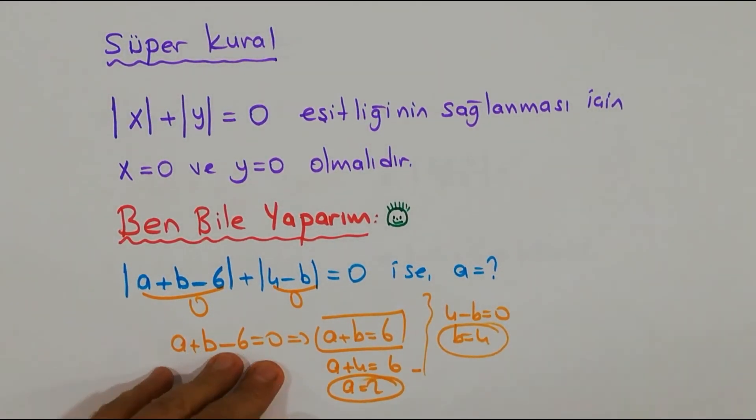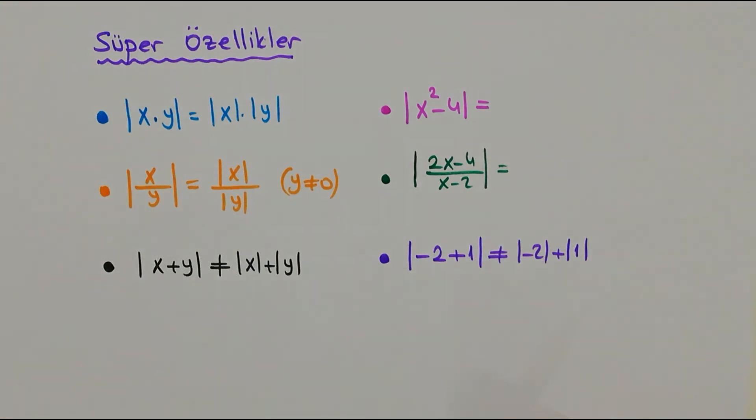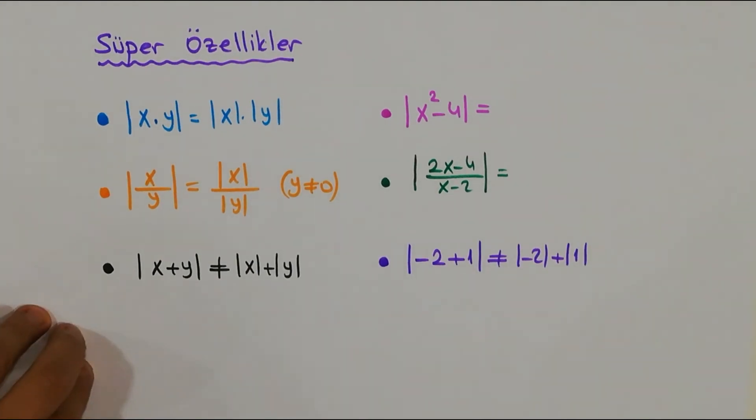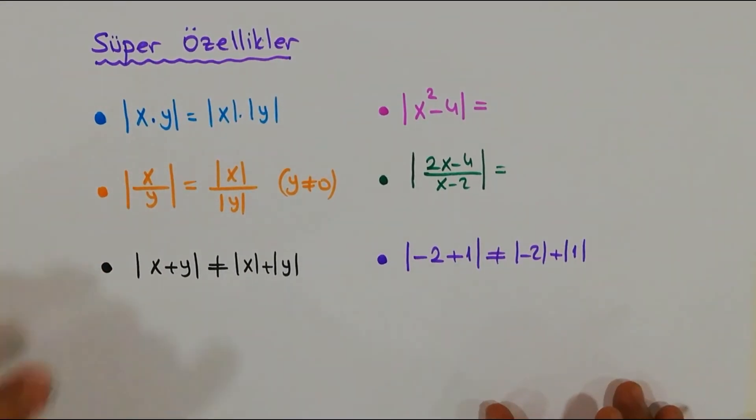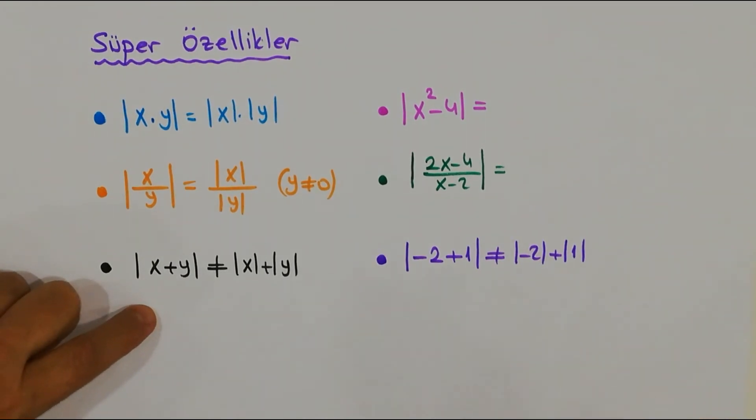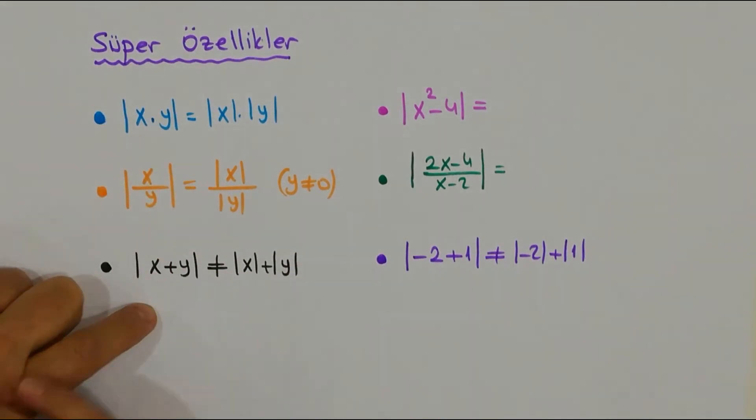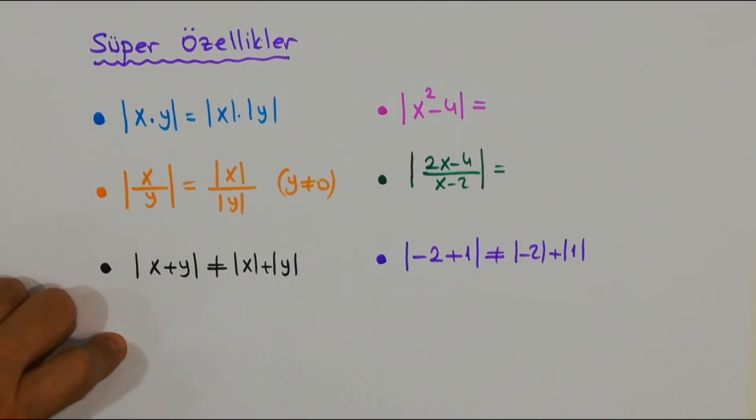Süper özellikler arkadaşlar kısmına geldik. Burada tabi arkadaşlar mutlak değerin daha 2. bölümünü çekeceğim size, burada bitmeyecek. Süper özelliklerden çarpmadan bahsedeceğim, bölmeden bahsedeceğim, bir de bir uyarıdan bahsedeceğim arkadaşlar. Şöyle ki eğer sizler bir mutlak değerde x çarpı y görüyorsanız, ihtiyaca binaen bunları isterseniz ayrı ayrı |x| çarp |y| biçiminde yazabiliyorsunuz, hiçbir sakıncası yok ve bilakis işinizi kolaylaştırıyor, elinizi güçlendiriyor arkadaşlar.